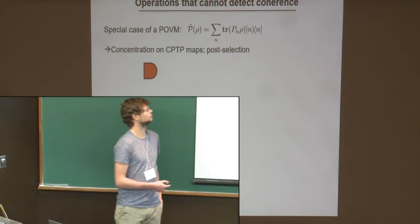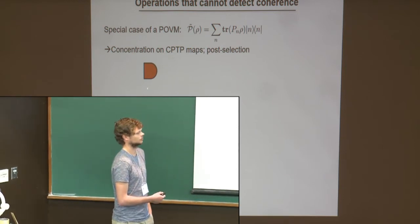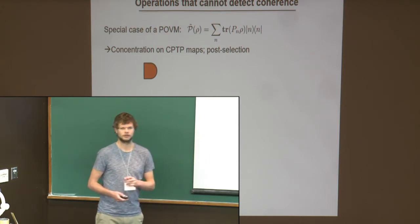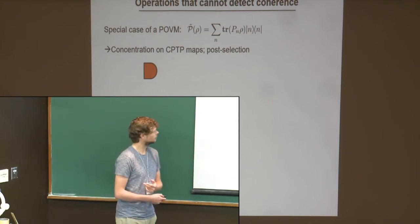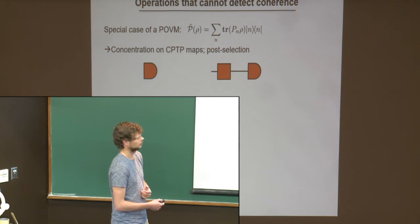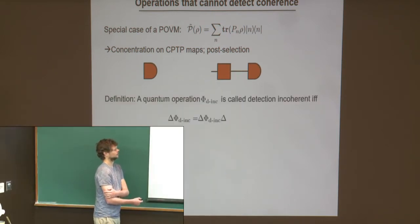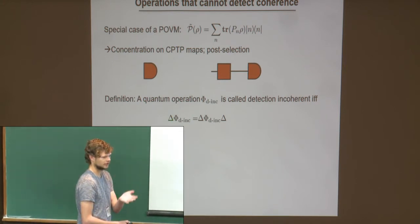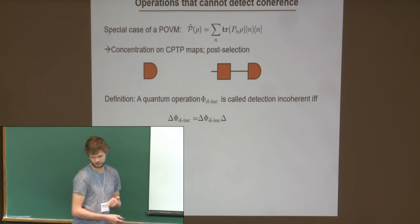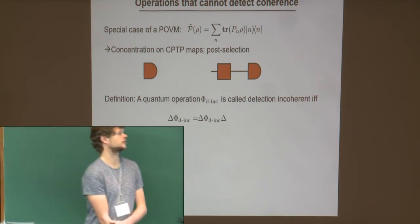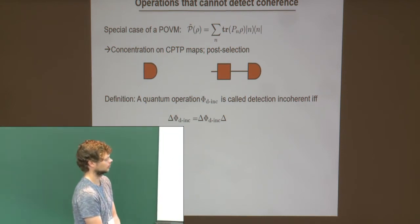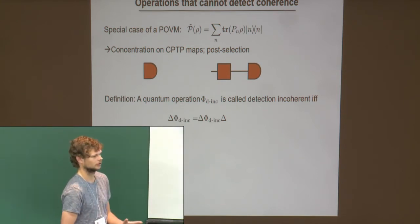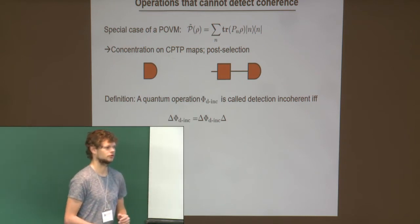For a general CPTP map, a detector is described by a POVM, and a general CPTP map is free if it cannot convert any free detector into a non-free one by first applying the operation prior to the detector. Mathematically, whether we first delete all coherences or not does not make a difference on the output when looking only at the diagonals, because the free POVMs can only see the diagonals. This is our definition of free operations, and we call them detection-incoherent. From now on, since we do this encoding in an additional auxiliary system, we will only focus on CPTP maps.